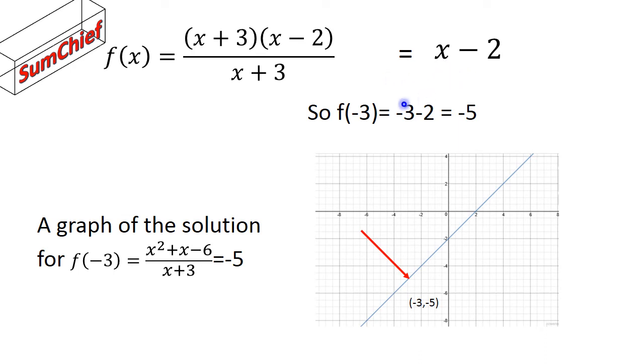f of x equals x minus 2. Just plug in the f of x when x is minus 3. This gives us minus 3 minus 2, which gives us minus 5. Therefore, the solution is x minus 2.